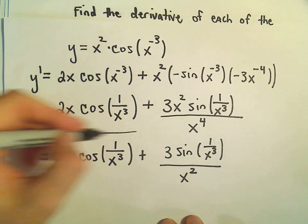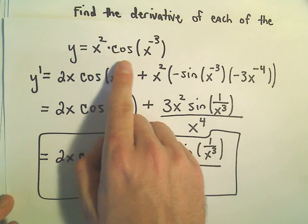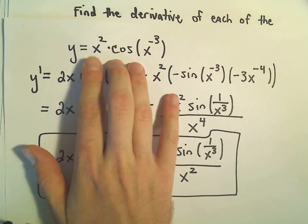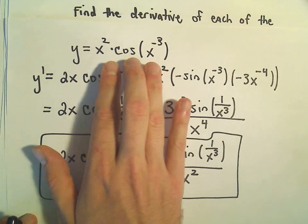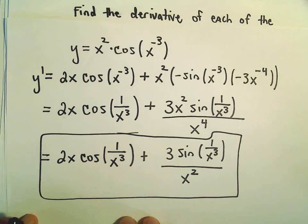So again, nothing too terrible here, just being careful. When I first look at these, I think about what rules I have to use. Product rule, because you've got variable stuff times variable stuff. And then when I look at the individual things, that's when I recognize that I'll have to use the chain rule.